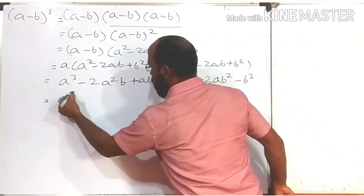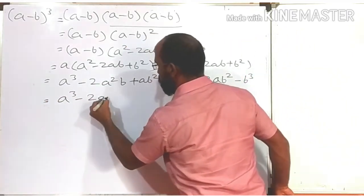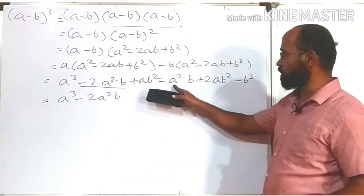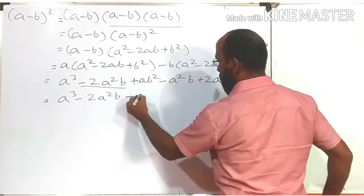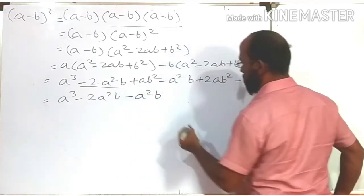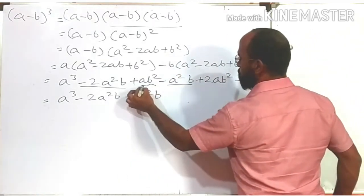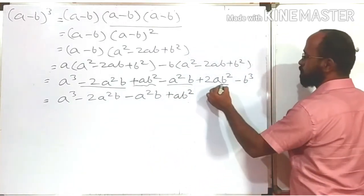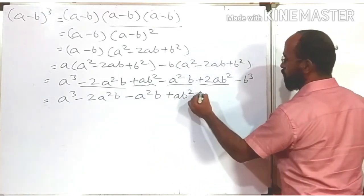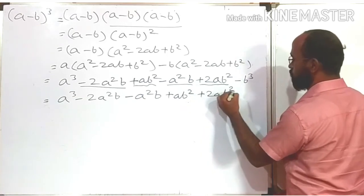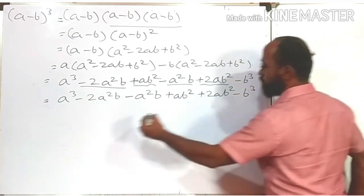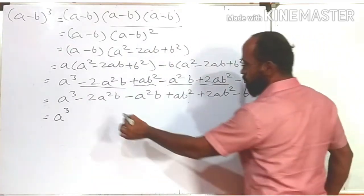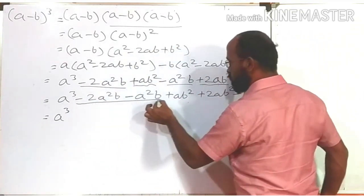Now arrange the like terms. We have: a³, then -2a²b and -a²b (like terms), then ab² and +2ab² (like terms), then -b³. So grouping: a³, (-2a²b - a²b), (ab² + 2ab²), and -b³.